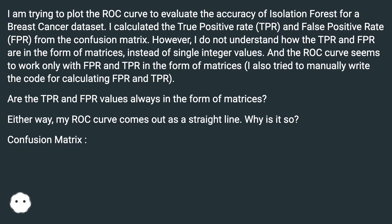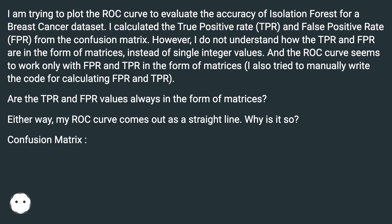The ROC curve seems to work only with FPR and TPR in the form of matrices. I also tried to manually write the curve for calculating FPR and TPR. Are the TPR and FPR values always in the form of matrices? Either way, my ROC curve comes out as a straight line. Why is it so?